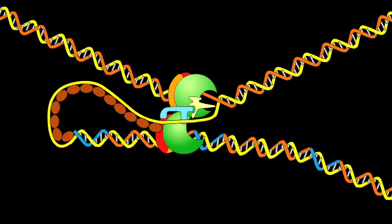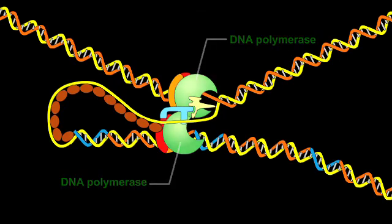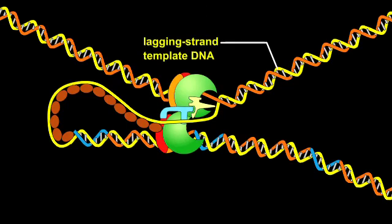In a replication fork, two DNA polymerases collaborate to copy the leading strand template and the lagging strand template DNA.